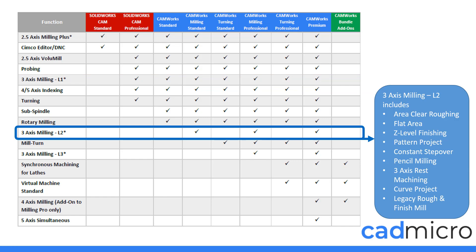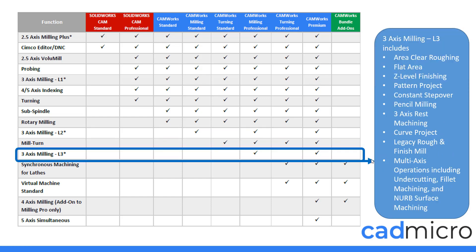Three axis milling level two is included in CAMWorks milling standard, milling professional, and the premium packages — basically this gives you all of the three axis toolpaths. Three axis milling level three includes everything previously mentioned as well as a multi-axis operation which includes undercutting, fillet machining, and NURBS surface machining. This is included in both CAMWorks milling professional and the CAMWorks premium packages — the highest end three axis toolpath package provided by CAMWorks.